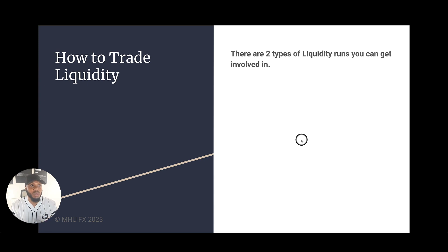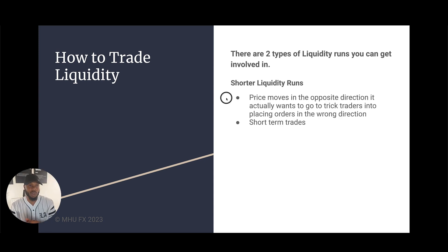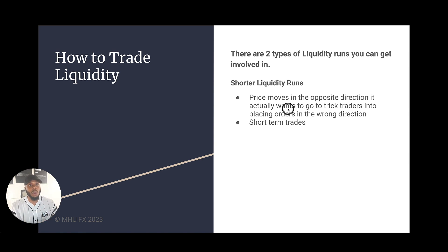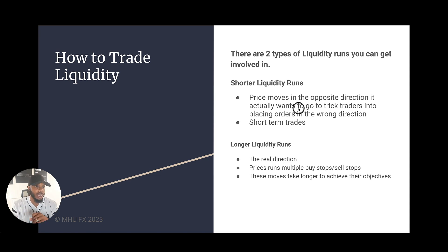There are two types of liquidity runs you can get involved in. The first is the shorter liquidity run. This is normally when price moves in the opposite direction it actually wants to go — it tricks you into thinking price is going up, but it's really going down. That part going up is short term, and there's technically no follow through because price then turns back the other way.